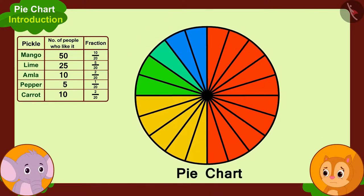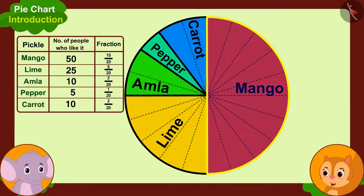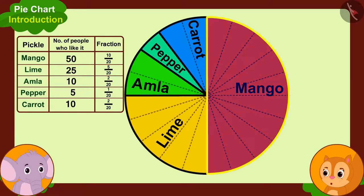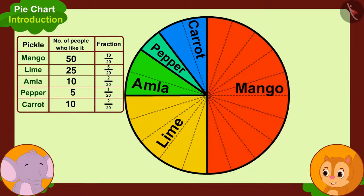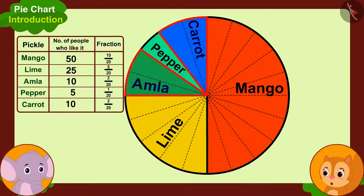'Our pie chart is ready!' Appu says. 'Now we can easily find out by looking at these parts that people like mango pickle the most, because the largest part of the pie chart shows the number of people who like mango. And this smallest part shows the people who like pepper pickle, so people who like pepper pickle are the least in number. Also, similar number of people like amla and carrot pickle — those who like these pickles are the same in number.'